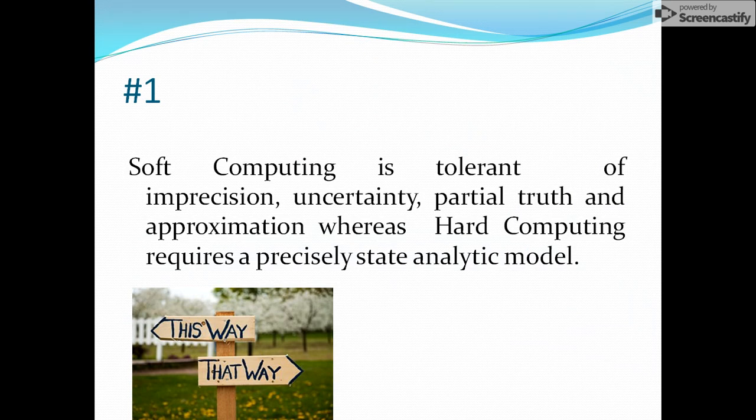The first difference is soft computing is tolerant of imprecision, uncertainty, partial truth and approximation. As you can see in this diagram, we have two options - either we can go this way or we can go that way. So in that case, how generally we will think about which way we have to move.